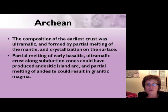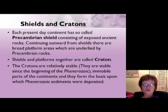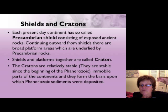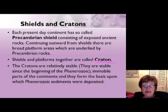Each present-day continent has a so-called Precambrian shield, consisting of exposed ancient rocks. Going outward from the shield you find the platform area, which is underlain by Precambrian rocks and covered by Paleozoic sediments. The shield and the platform together are called a craton — you need to know this for the midterm. Cratons are relatively stable since the beginning of the Phanerozoic, at least 540 million years, and form the immobile basis of continents on top of which Phanerozoic sediments were deposited.